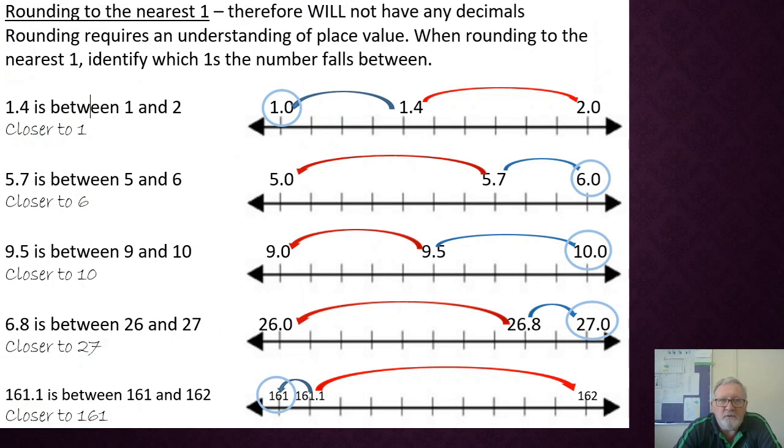When we're rounding to the nearest one, there won't be any decimals so we only need a whole number answer. It requires that understanding of place value so when we're rounding to the nearest one we have to identify which ones fall either side of the number we're dealing with. So if we're looking at 1.4 or one and four tenths it's between one and two. When you see it on this number line here, you can see it's closer to one so it's rounded down. That number there, the one, or the whole number there at the beginning is always what we should start with on our number line.